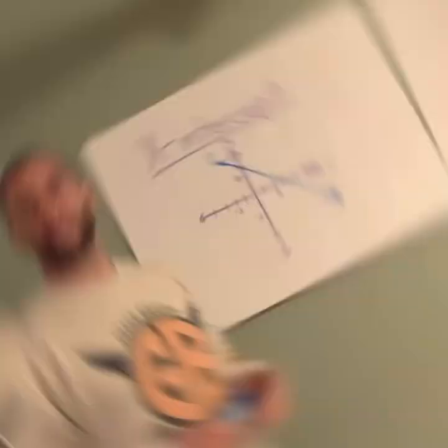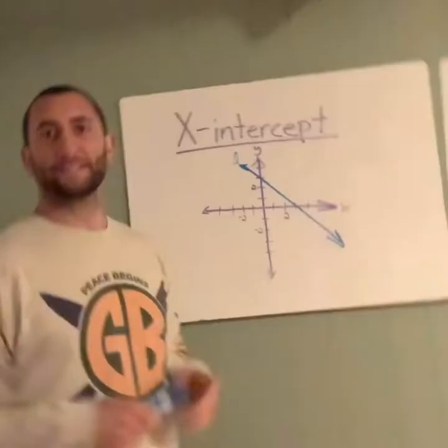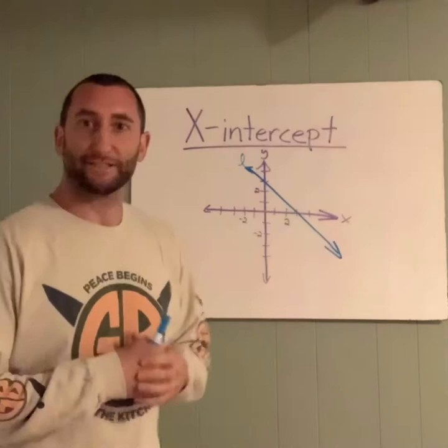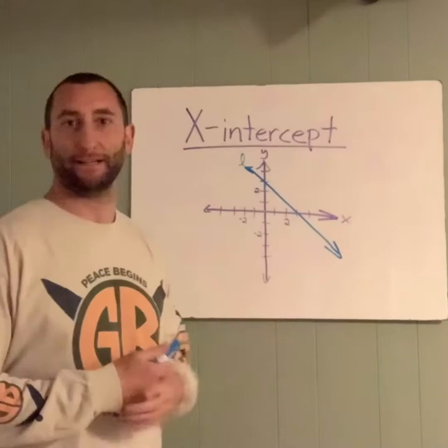Let's start with x-intercepts. How do we find the x-intercept? Here's a coordinate plane. We've got a line L on there. The x-intercept is where the line crosses the x-axis. Here's our line, here's our x-axis — that happens here.